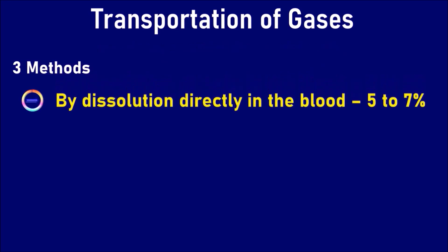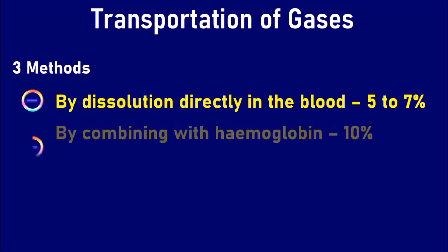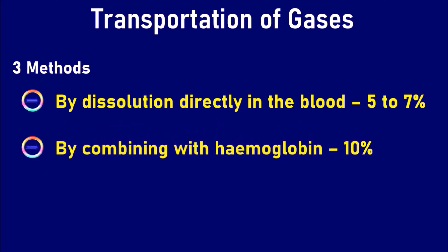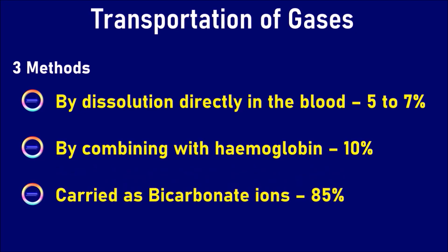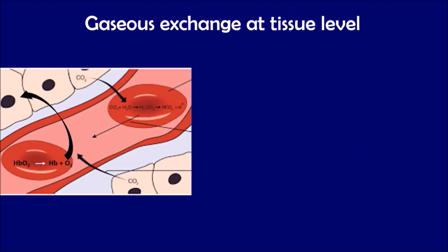The first method is by dissolution directly in the blood; 5–7% of carbon dioxide is transported this way. The second way is by combining with hemoglobin; around 10% of carbon dioxide is transported in this method. The third method is by being carried as bicarbonate ions; around 85% of carbon dioxide is transported in this way.